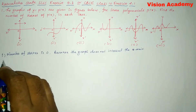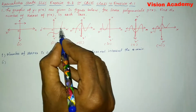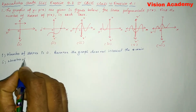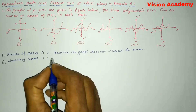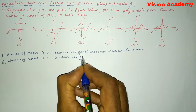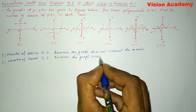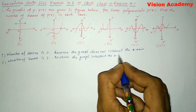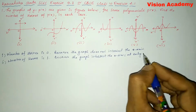Next let us move on to Roman number 2. You can see in the figure the graph is intersecting at one particular point. So here we can say the number of zeros is 1, because the graph intersects the x-axis at only one point.